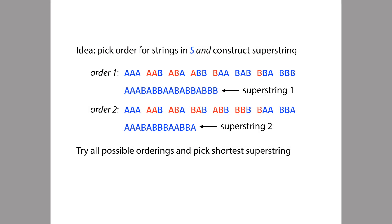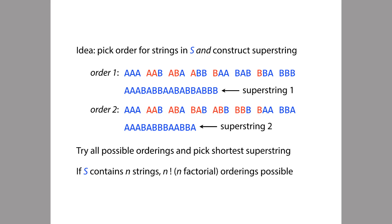To find the absolute shortest common superstring, we have to try all orderings. So the algorithm is: for every permutation of the n input strings, glue adjacent pairs together according to their maximal overlap, and the shortest result over all orderings is the shortest common superstring overall. This is slow because the number of orderings we must try is n factorial — the number of permutations of n strings — and n factorial grows very rapidly as n grows. That's why we call this an intractable problem.